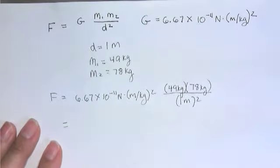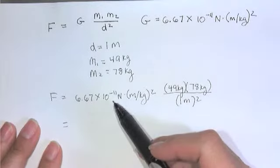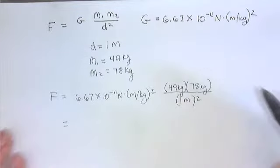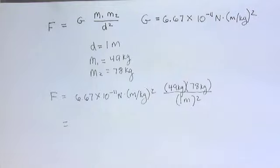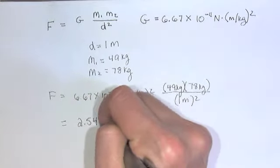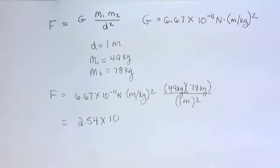Two mistakes people commonly make is they miss this minus 11 here, and they also forget to square this term on the bottom. So I'm going to put this into my calculator, and I get 6.67 exponent minus 11 times 49 times 78 divided by 1 squared, which is 1. And I get 2.54 times 10 to the minus 7.